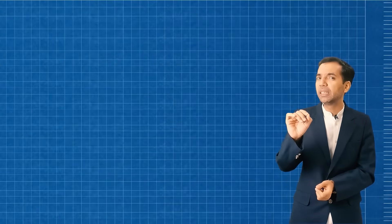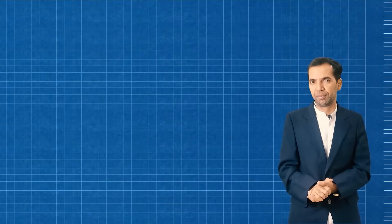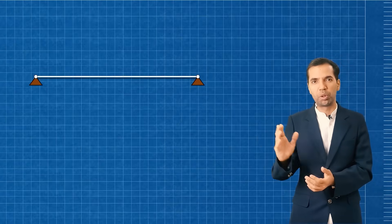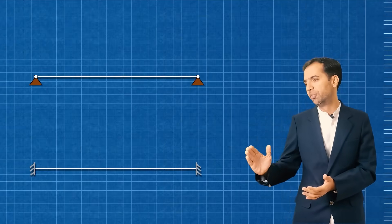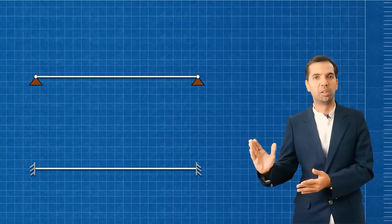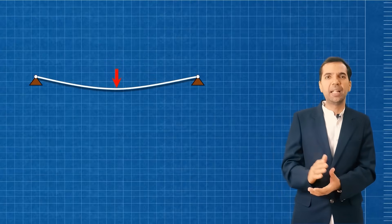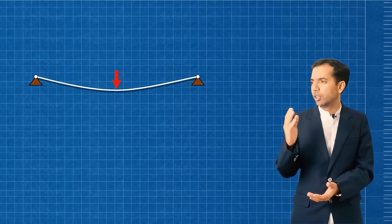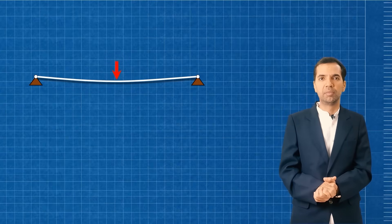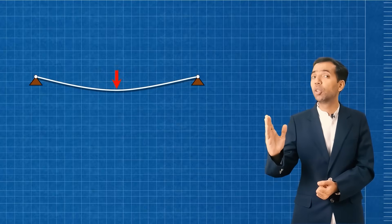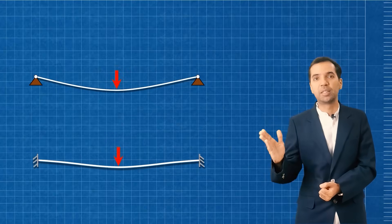Now, how do we draw a simply supported beam in our academy? This is a simply supported beam — this is how you draw it. And this is a fixed beam — this is how we draw it. If a load is applied, how is it going to reflect? This is the way a simply supported beam is going to deflect, and this is how a fixed beam is going to deflect.